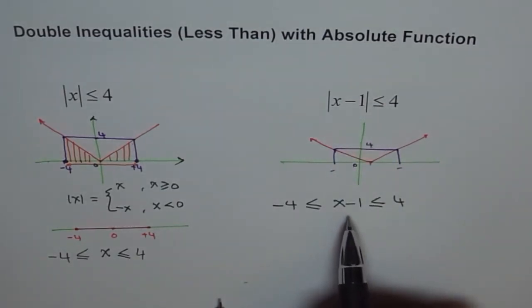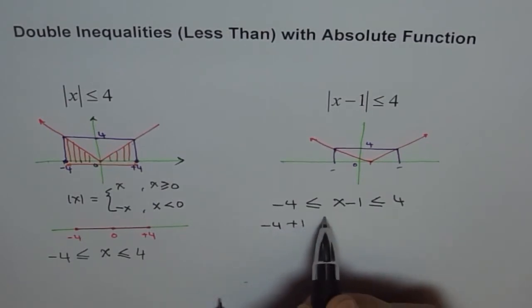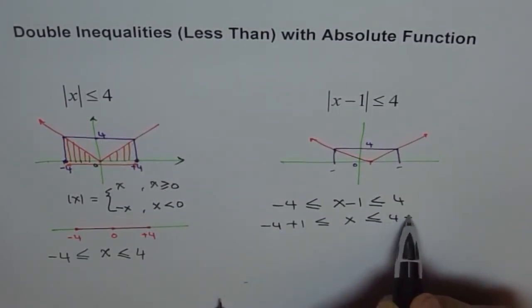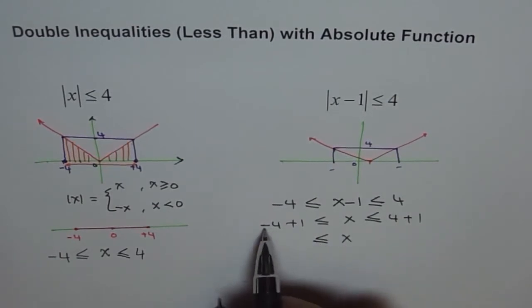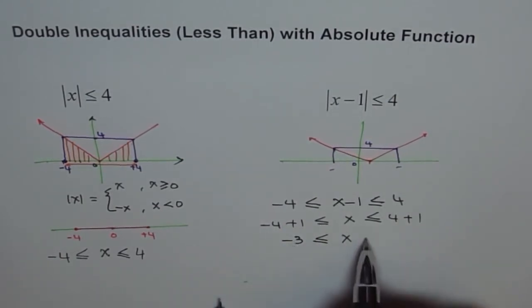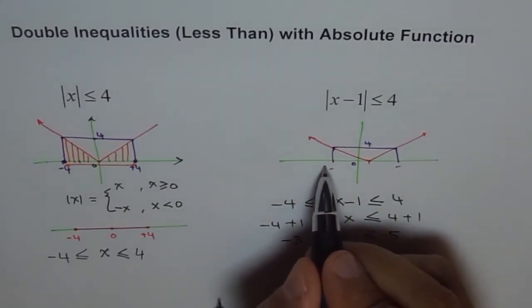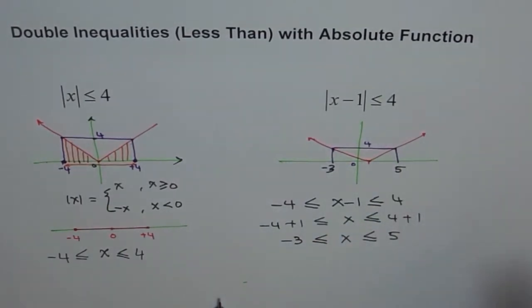Now we can solve this inequality by adding 1 on both sides. Adding 1 on both sides: minus 4 plus 1 is less than or equal to x minus 1 plus 1 is less than or equal to 4 plus 1. Minus 1 plus 1 becomes 0, so I get x. Therefore x is between minus 4 plus 1 which is minus 3, and 4 plus 1 which is 5. So x is between minus 3 and 5. That is our answer.